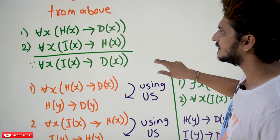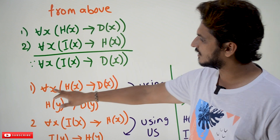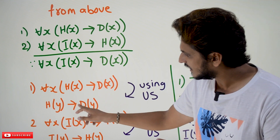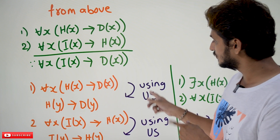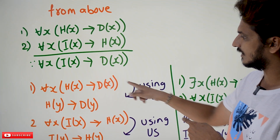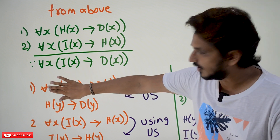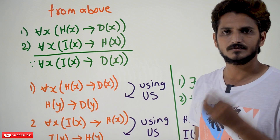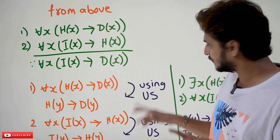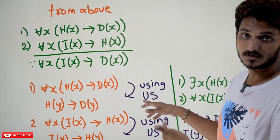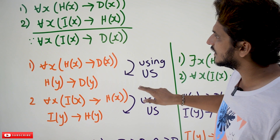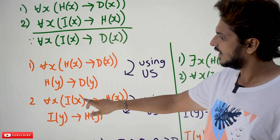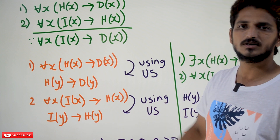Coming to the derivation part. The first statement — for all x, h(x) implies d(x) — can be written as h(y) implies d(y). This is from universal specification. If it is true for all x, we can conclude it is true for a single subject y. Similarly, for the second statement — for all x, i(x) implies h(x) — we can conclude i(y) implies h(y), using universal specification.